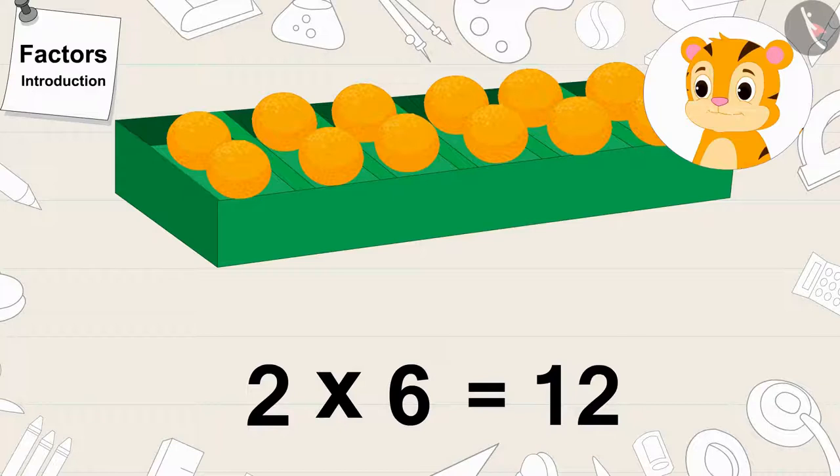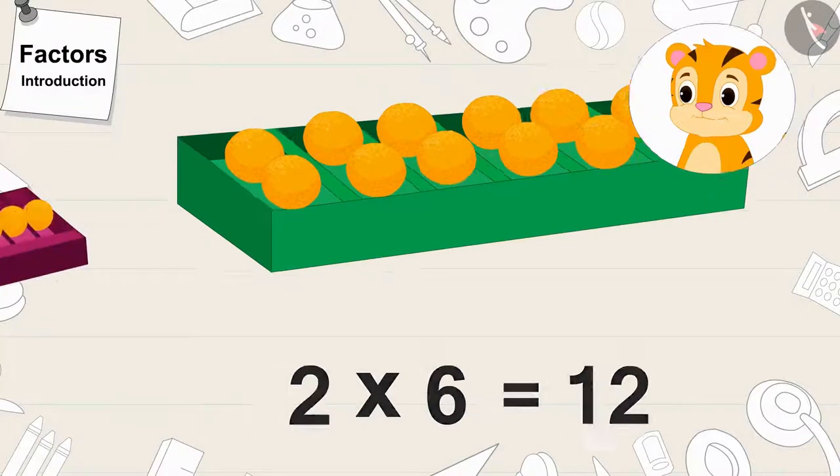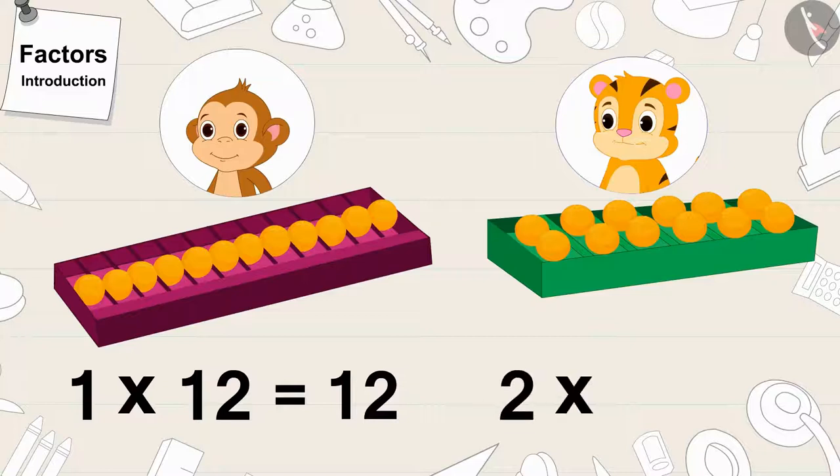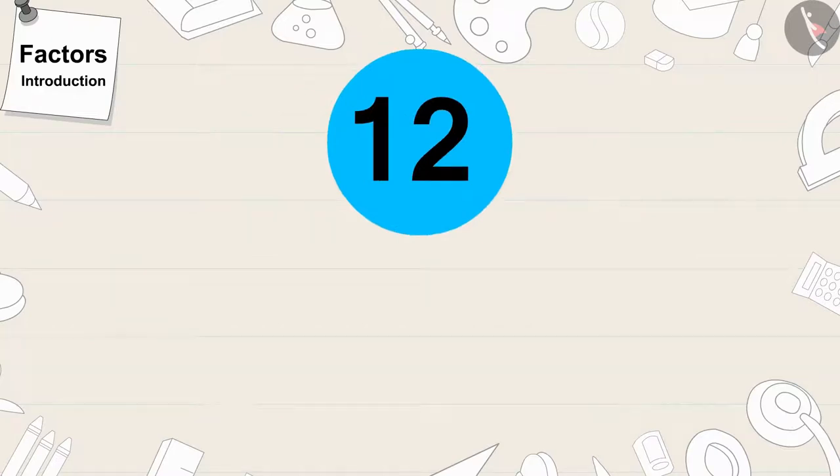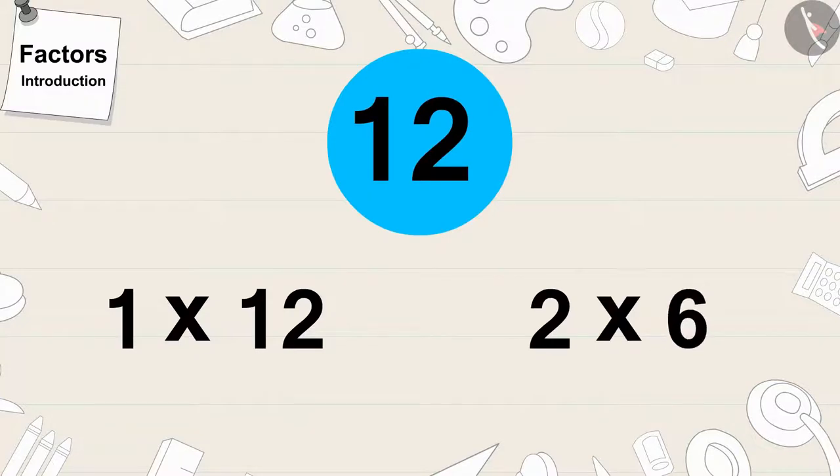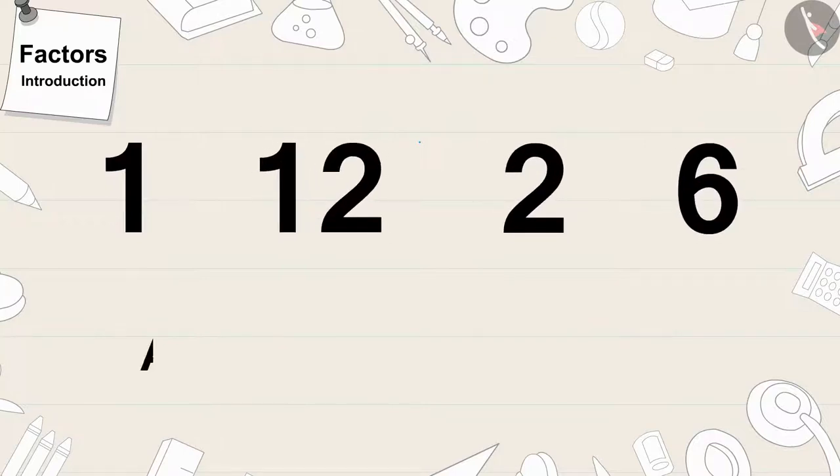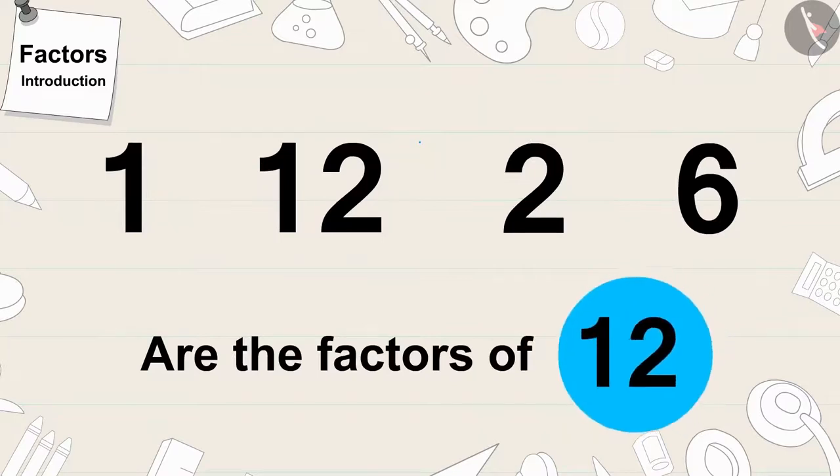Children, if we look closely, we will find that in Babban's box, there are 1 times 12, 12 laddus. In other words, we can write 12 as 1 times 12 or 2 times 6 in any of these ways. 1, 12, 2 and 6 are the factors of 12.